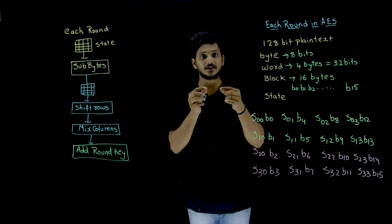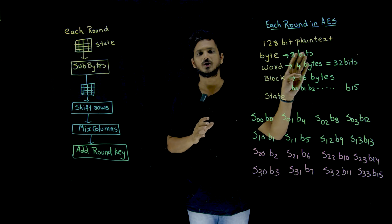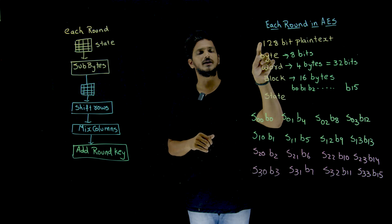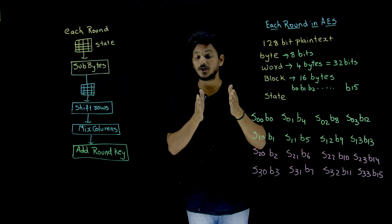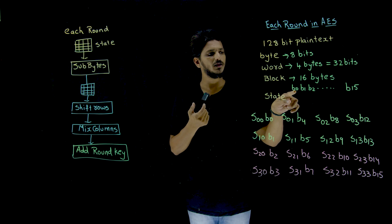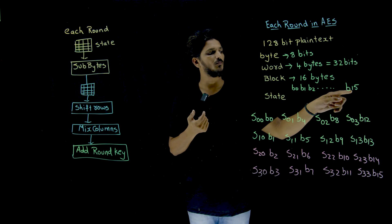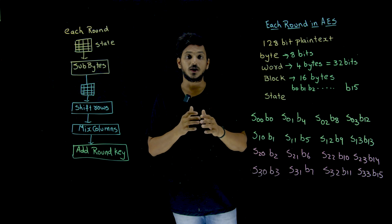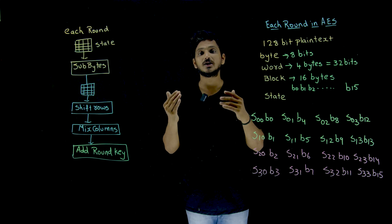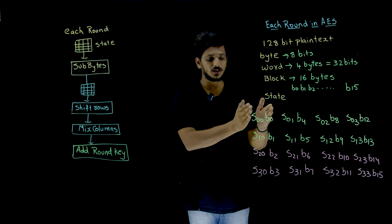Each 4 bytes we take row-wise or column-wise, and 4 bytes we call it as a word. This entire 128-bit plain text we call it as a block. Here we are dividing it into 8 bits, meaning in the form of bytes. So total how many bytes will we get? 16 bytes, numbered as B0, B1, B2 up to B15. In AES we are going to use matrix notation, a two-dimensional array notation, to store our data.